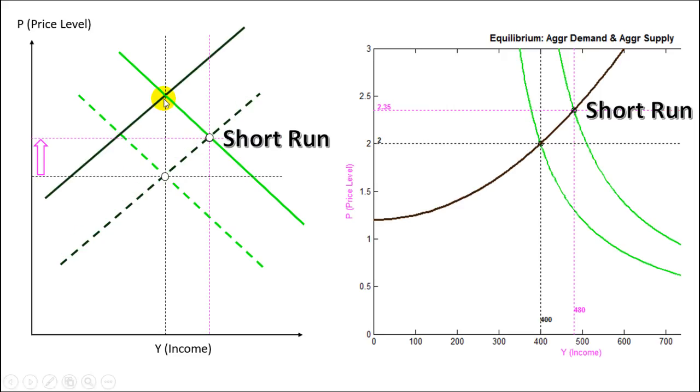So in the medium run what happens is that the supply curve shifts and then the equilibrium passes from this point in the short run to this point in the medium run and the price level increases from here to here.